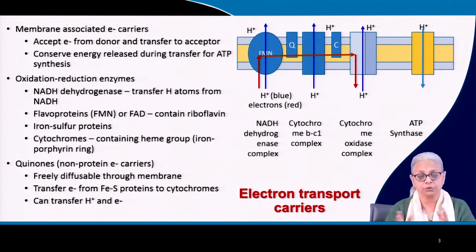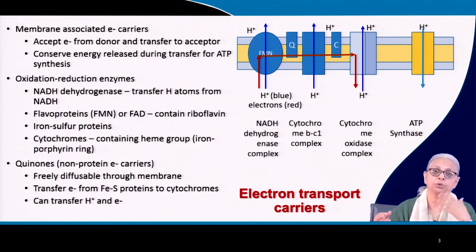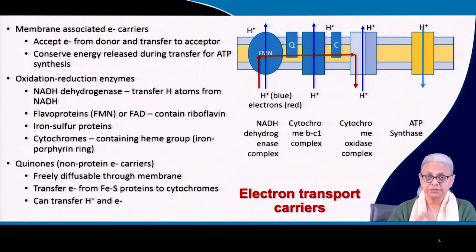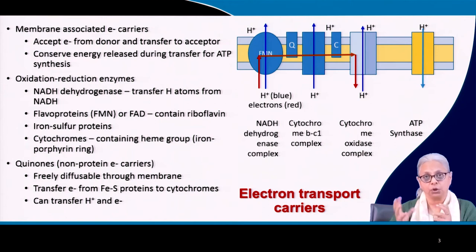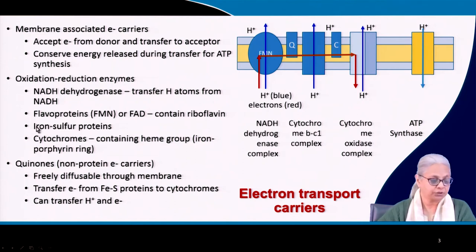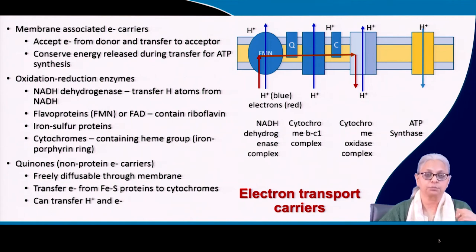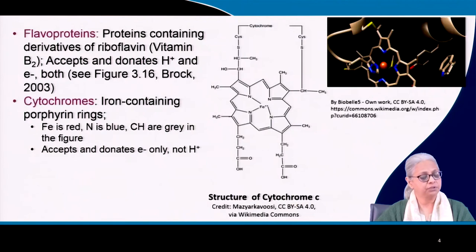NADH dehydrogenase transfers a hydrogen atom from NADH — splitting protons and electrons — the electrons are passed from complex to complex and the protons are pumped out of the cell. Flavoproteins (FAD) contain riboflavin and are also oxidation-reduction enzymes. Iron-sulfur proteins and cytochromes contain heme groups or other methods of transferring electrons. The non-protein electron carriers are quinones — freely diffusable through the membrane — which can transfer electrons from iron-sulfur proteins to cytochromes, and can transfer both protons and electrons.